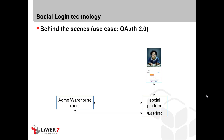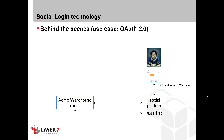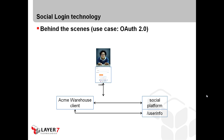The social platform will display its own login page. The user will provide his credentials — username and password — sign in, and grant the Acme Warehouse client application access to his protected resources. Google will send an HTTP redirect to the browser again; the location is the Acme Warehouse client. In OAuth 2, this would be the redirect URI that was registered by Acme Warehouse. The response will also include the authorization code.